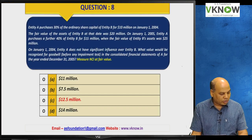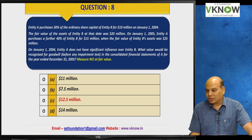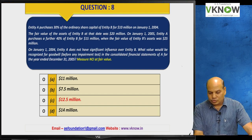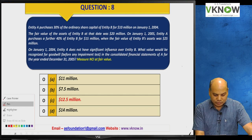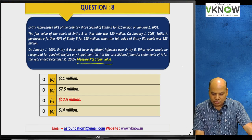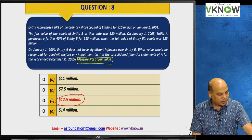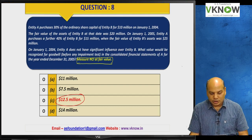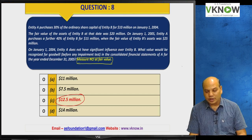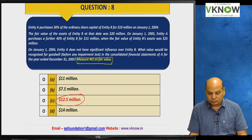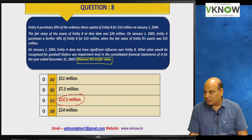Question number eight requires some correction in the book: add one line stating 'measure NCI at fair value,' and correct one option figure to 12.5 million. The question: Entity A purchases 30 percent of the ordinary share capital of Entity B for $10 million on 1st January 2004. The fair value of assets of Entity B at that date was $20 million.